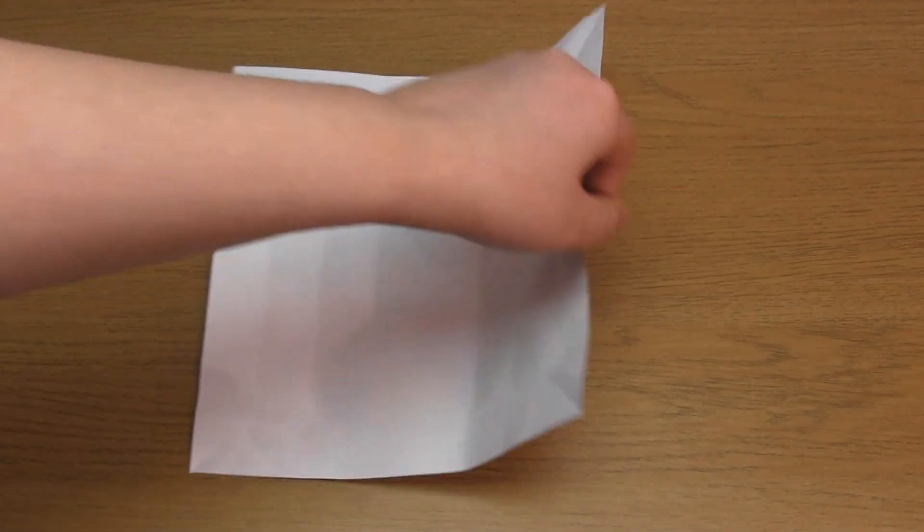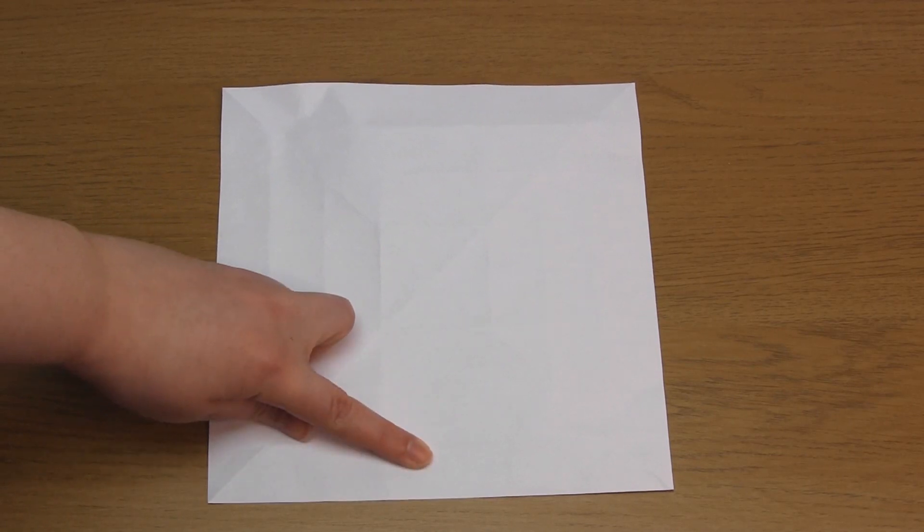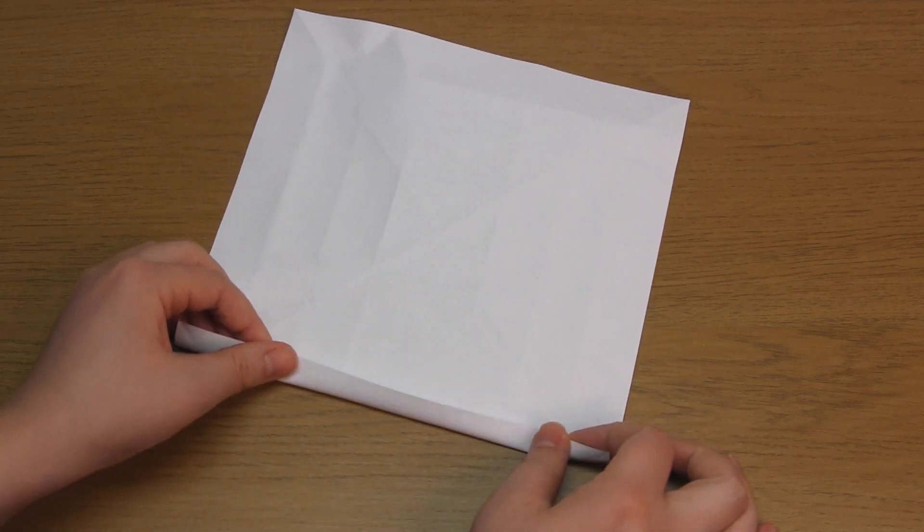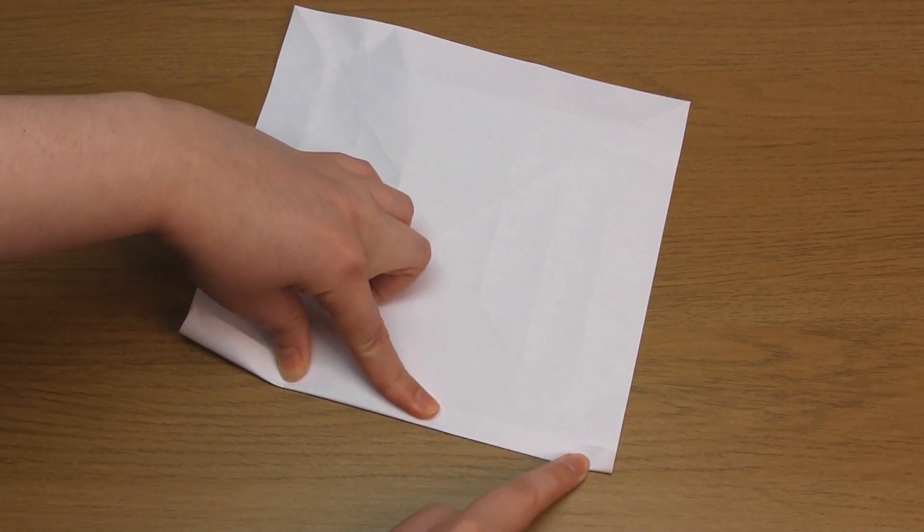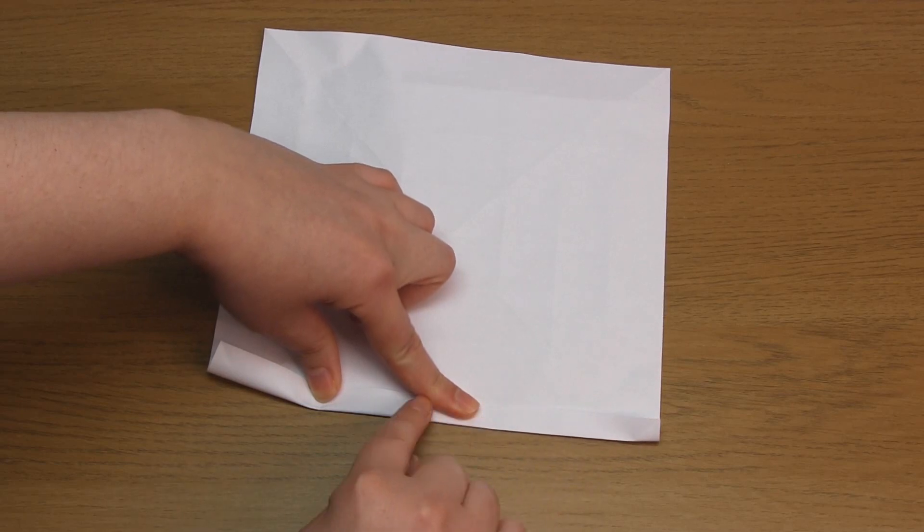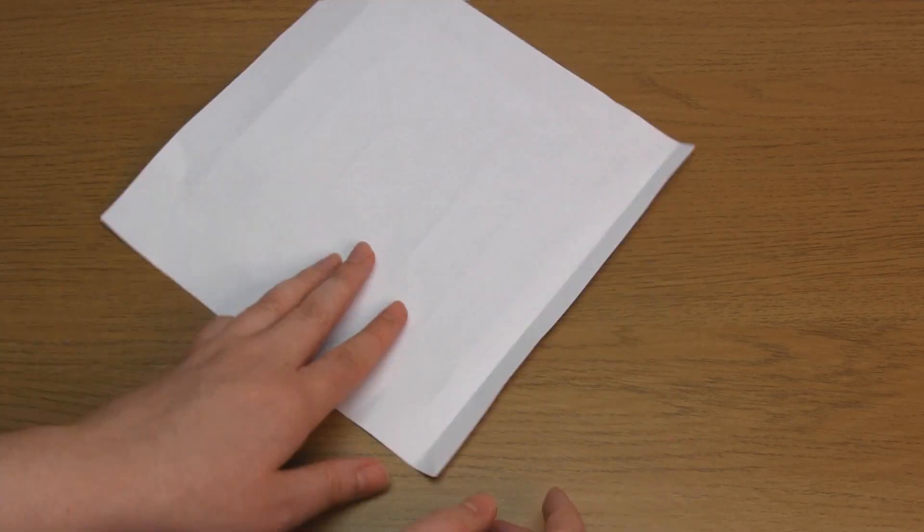Now you need to flip over the piece of paper and we'll be making a fold in between all of these folds. So fold over the bottom edge so it lines up with the first fold. So just line it up with the fold nearest the edge. As usual, only crease the paper between the diagonal folds. Then repeat this on each edge.